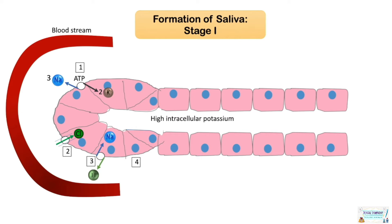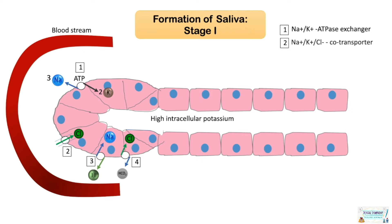Chloride and sodium are taken up by the acinar cells, while on the luminal surface, chloride channels allow for rapid efflux of chloride following cellular stimulation. In summary, four ionic transport systems are majorly involved: the sodium-potassium ATPase, the sodium-potassium-chloride co-transporter, the sodium-proton exchanger, and the chloride-bicarbonate exchanger.